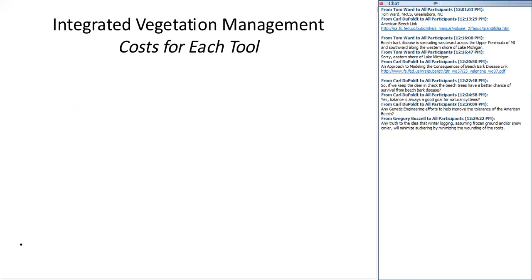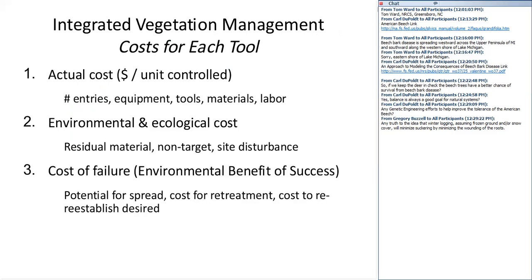We have costs to consider. There are the actual costs, and there are environmental costs — which can be positive or negative. If you use the wrong treatment, you may have unnecessary ecological costs. If you're not effective and the plant spreads more, that's also a negative ecological cost. Finally, there are costs associated with the people doing the work — it's important to think about what they're being exposed to, and if it's on a steep slope, what kinds of equipment should or shouldn't they be using.